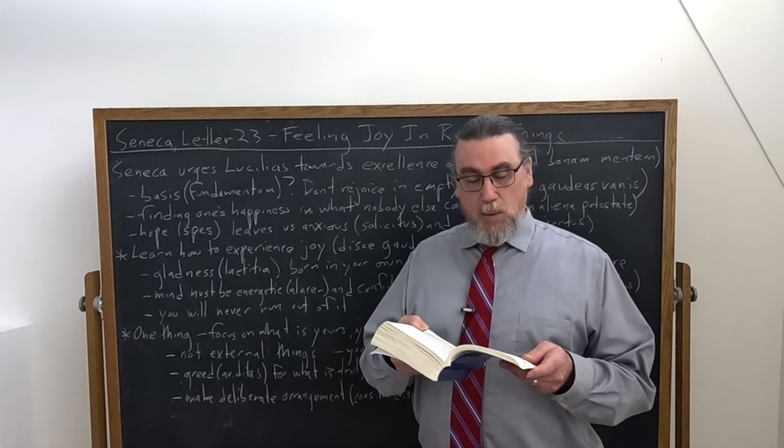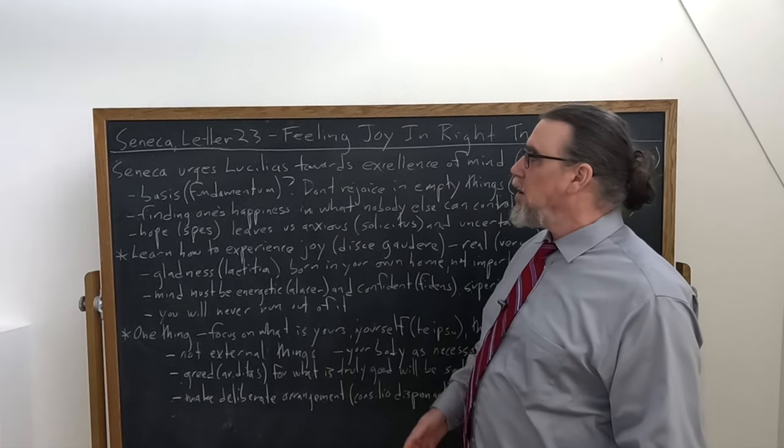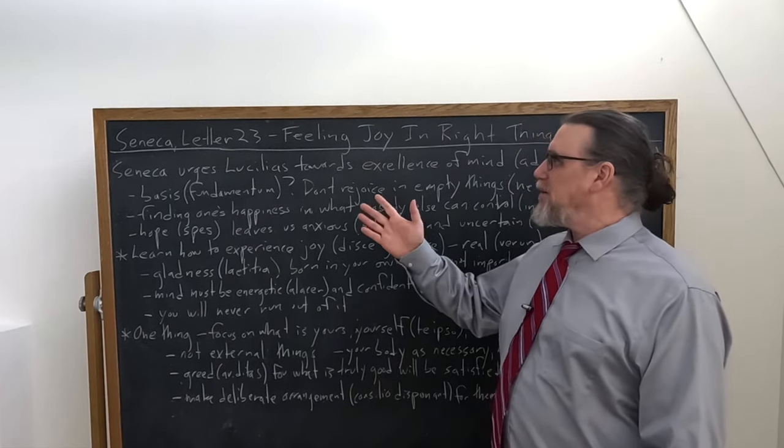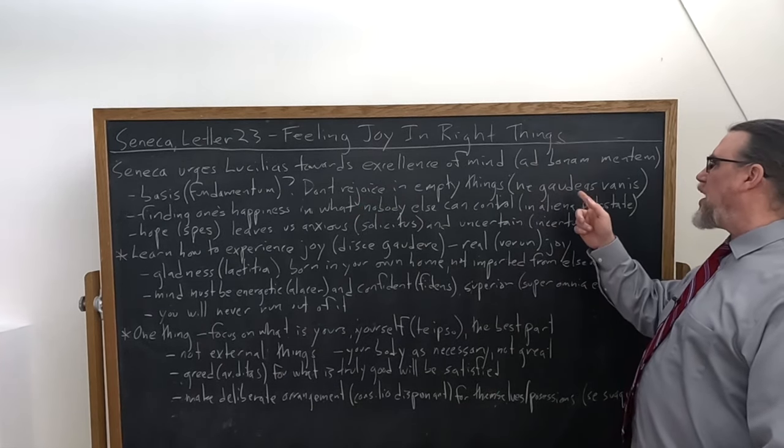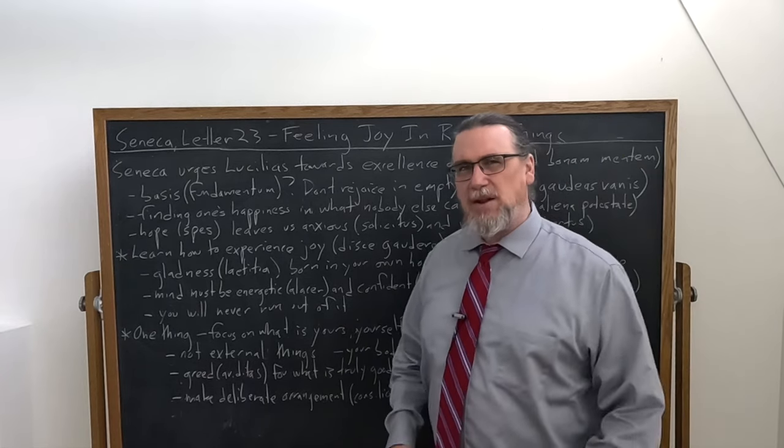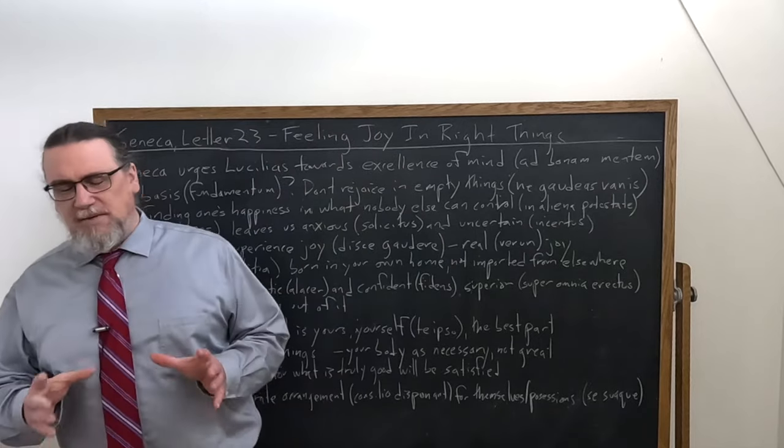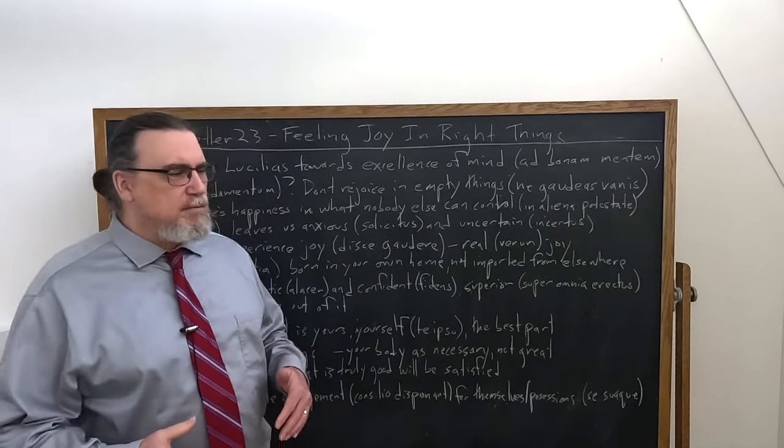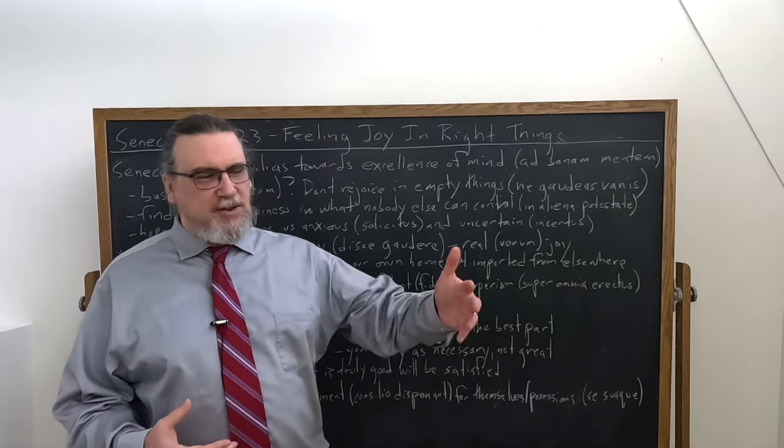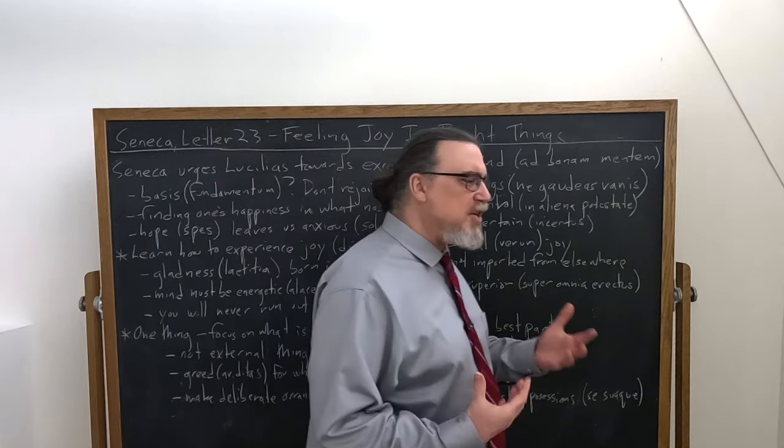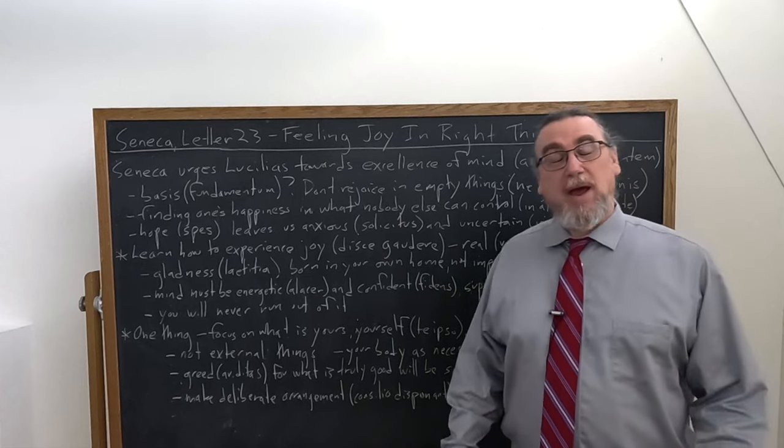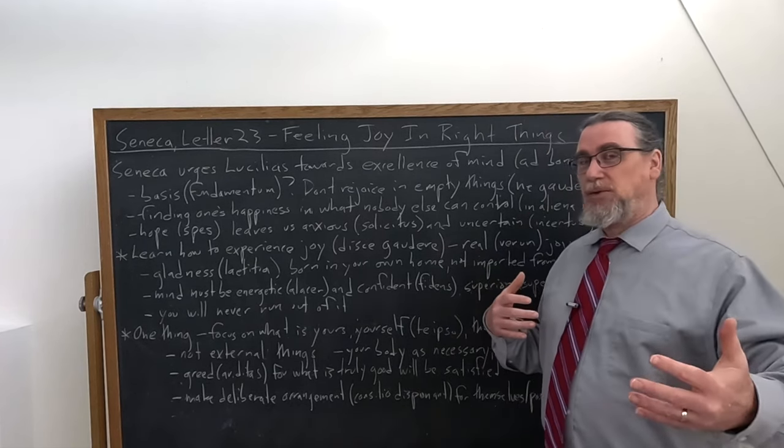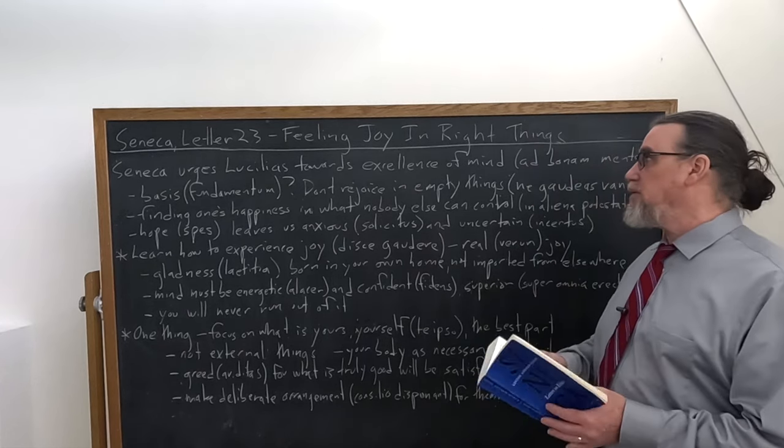And then he says, would you like to know what such excellence is founded upon? What is the basis, the fundamentum for this? And he's going to take that word back in just a moment. What is it? Don't rejoice in empty things. Ne gaudias vanis. So empty things or vain things. This is an idea that's kicked around by a lot of ancient schools. There's a number of things that won't really make us happy, but people will tell us and culture will tell us, and the examples of watching other people compete for these will tell us that these things could in fact make us feel joy. And it's up to us what we try to find joy in. So he's writing to somebody and saying, don't try to find your joy in these empty or vain things.